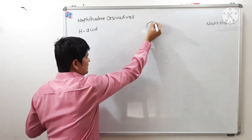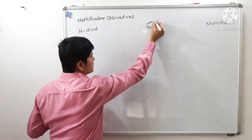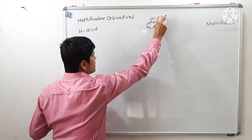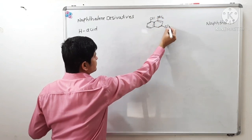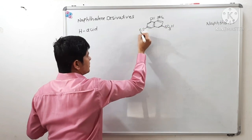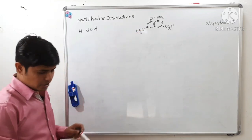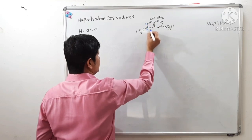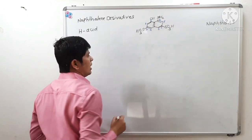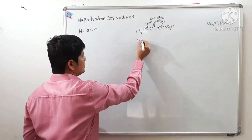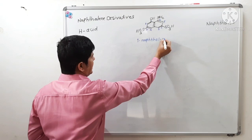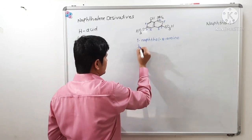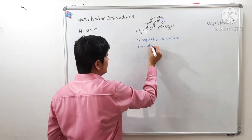I will write the structure of H-acid. So, this is H-acid. How this H-acid can be numbered? It is numbered starting from this carbon atom: 1, 2, 3, 4, 5, 6, 7, 8. So, I can say 1-naphthol, 8-amino, 3,6-disulfonic acid.